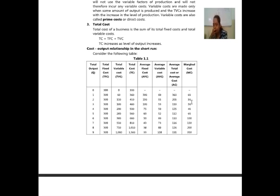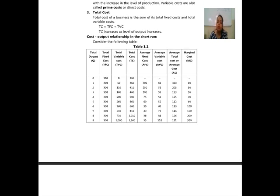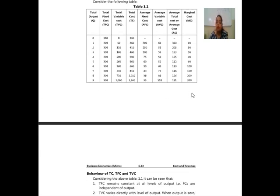Similarly, as output goes on increasing up to nine units, total fixed cost remains constant while total variable cost continues to change. Because we are introducing additional units, total cost also changes, average cost changes, and marginal cost — the cost of increasing production by one item — goes on changing. This is how we can observe cost behavior as output increases through the table.